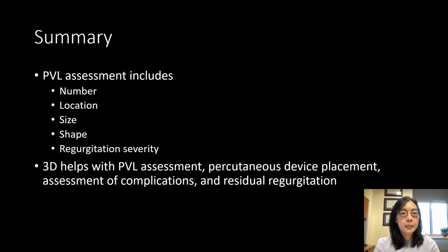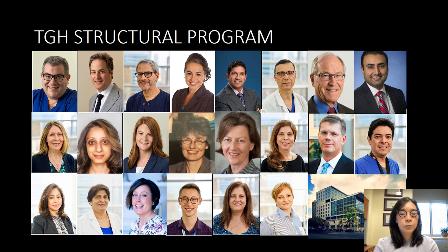In summary, paravalvular leak assessment includes identification of number, location, size, shape, and regurgitation severity for both the mitral and aortic valves. You have to look at both the mid-esophageal for the mitral valve and the transgastric views for the aortic. Use a standard systematic approach — increasing angle in increments and doing sweeps — to ensure no leaks are missed. 3D echocardiography is very helpful for location and sizing of leaks, and is also useful for percutaneous device placement, assessment of complications, and residual regurgitation. I'd like to acknowledge the structural program for obtaining some of these images. Thank you.